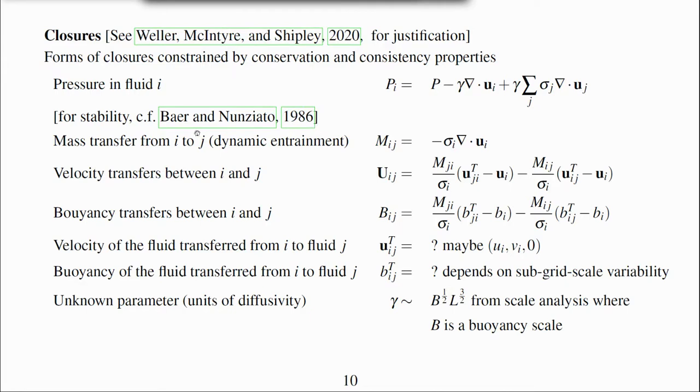The mass transfer from fluid i to j is set to be the dynamic entrainment, which is equal to the divergence for each fluid.